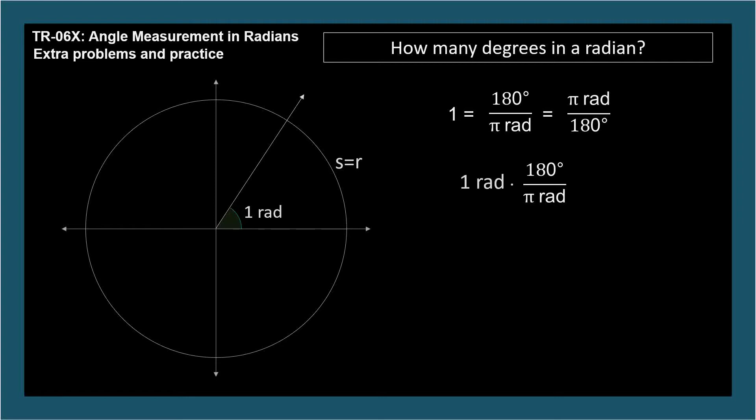As a check, the radian label cancels out, and the answer is approximately 57.3 degrees.